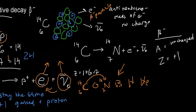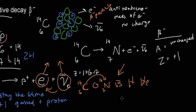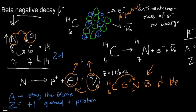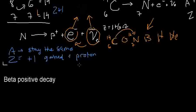Now let's discuss beta positive decay. If I switch the situation around — I tend to use carbon since I'm mostly made of carbon — let me draw a nucleus with six protons.